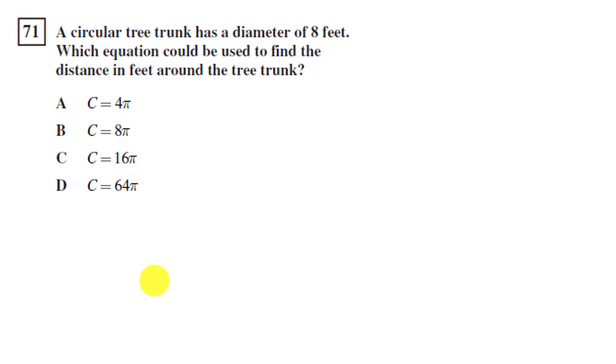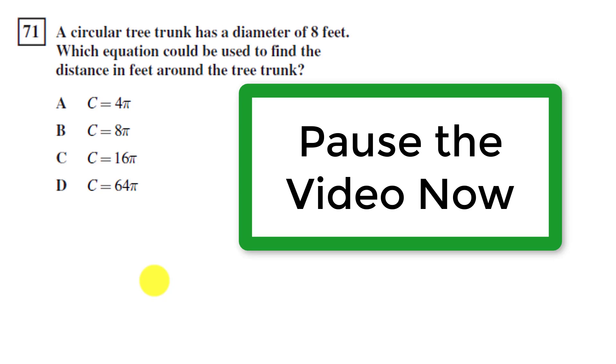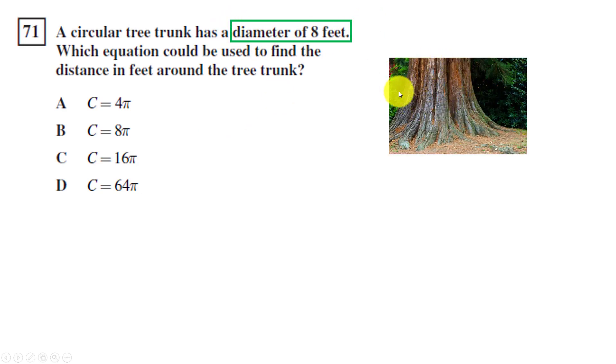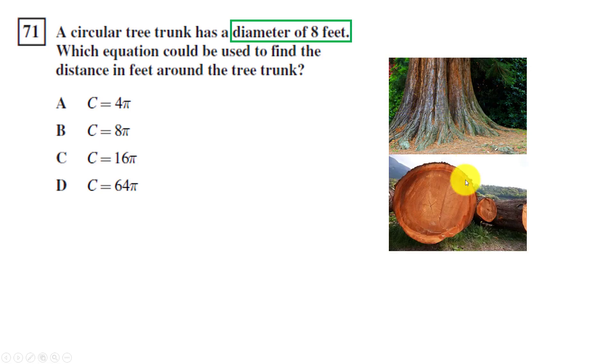Read this question carefully. Highlight the important terms. Pause the video and give it a try on your own. When I read questions like this, I try to visualize what are they talking about. So a circular tree trunk has a diameter of 8 feet. So I highlighted the diameter of 8 feet part, and I'm envisioning a tree. And I'm thinking, alright, the diameter is some line that goes in between this tree. But maybe if we viewed the trunk like this, we're talking about the diameter across is about 8 feet. You can kind of see that here.